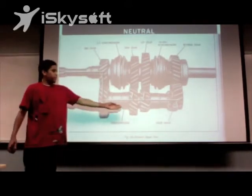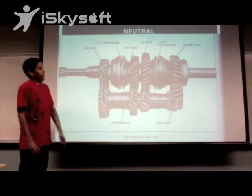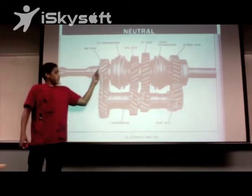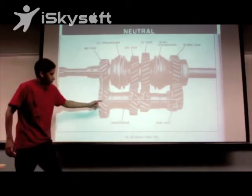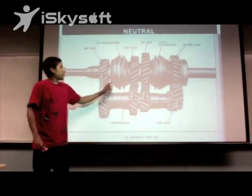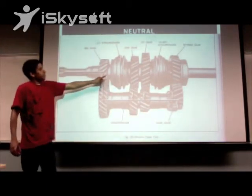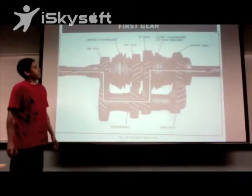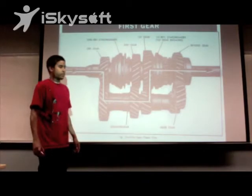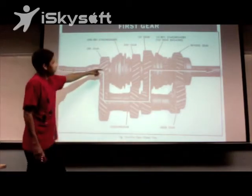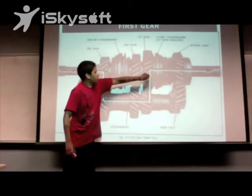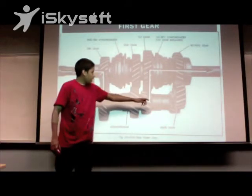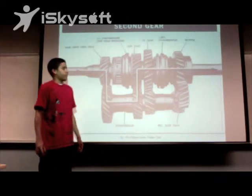This is an example of a three-speed manual transmission. Right now the transmission is in a neutral position. The power is inputted through the input shaft and reaches down through the counter shaft. As you can see, the collars of the shaft are not fixed on any of the engagement teeth of the gears. This is an example of the transmission in first gear. As you can see, the collar is now back onto the gear ratio of these engagement teeth and receives power directly from the input shaft.